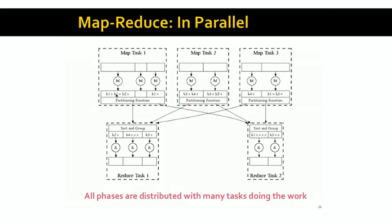Once the intermediate key-value pairs are produced, the underlying MapReduce system uses a partitioning function, which is just a hash function. The MapReduce system applies a hash function to each intermediate key value, and the hash function tells the MapReduce system which reduce node to send that key-value pair to. This ensures that all the same key values, whether they're in map task one, two, or three, end up being sent to the same reduce task. So in this case, the key K4, regardless of where it started from, always ends up at reduce task one. And the key K1 always ends up at reduce task two.